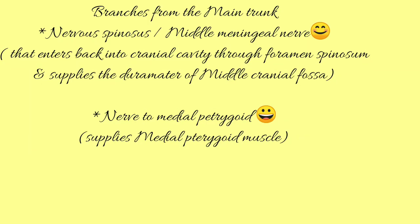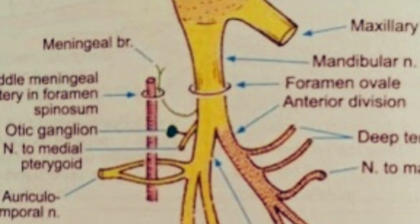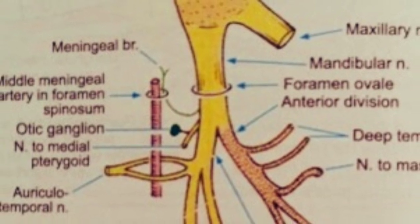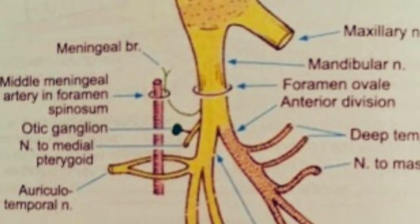Branches from the main trunk include Nervus Spinosus, or the Middle Meningeal nerve, supplying the dura mater of the middle cranial fossa, and the nerve to the medial pterygoid, supplying the medial pterygoid muscle. You can see the meningeal branch and nerve to medial pterygoid coming from the main trunk.